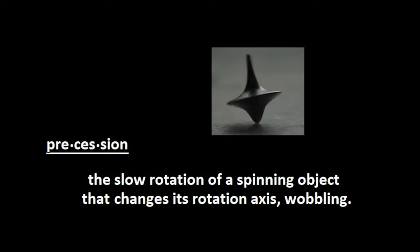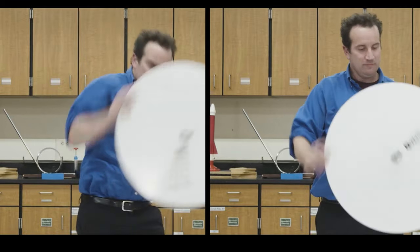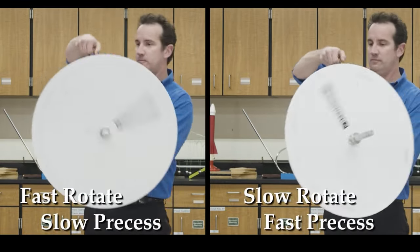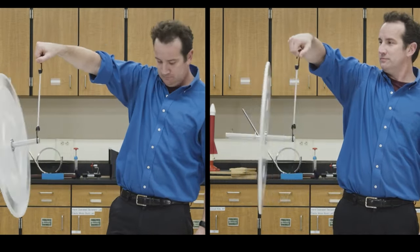Now, the thing about gyroscope wheels is they precess, but the rate of rotation affects the rate of precession. You can easily see this with the black stripe.